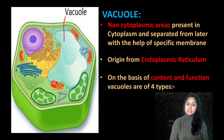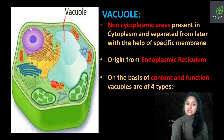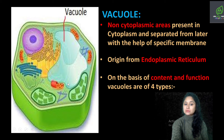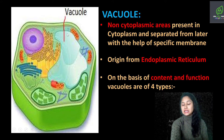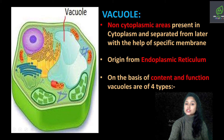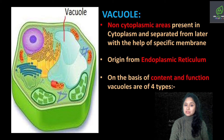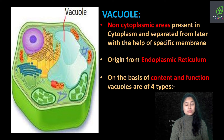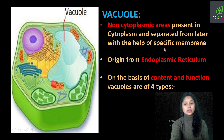Vacuoles are the non-cytoplasmic areas. You can see this is going to be the cytoplasm of the cell, but this vacuole is a non-cytoplasmic area that is present in the cytoplasm. It is separated from the cytoplasm with the help of a specific membrane. And if you remember, we discussed that in eukaryotic organisms, there is a membrane in vacuoles and that is called tonoplast.